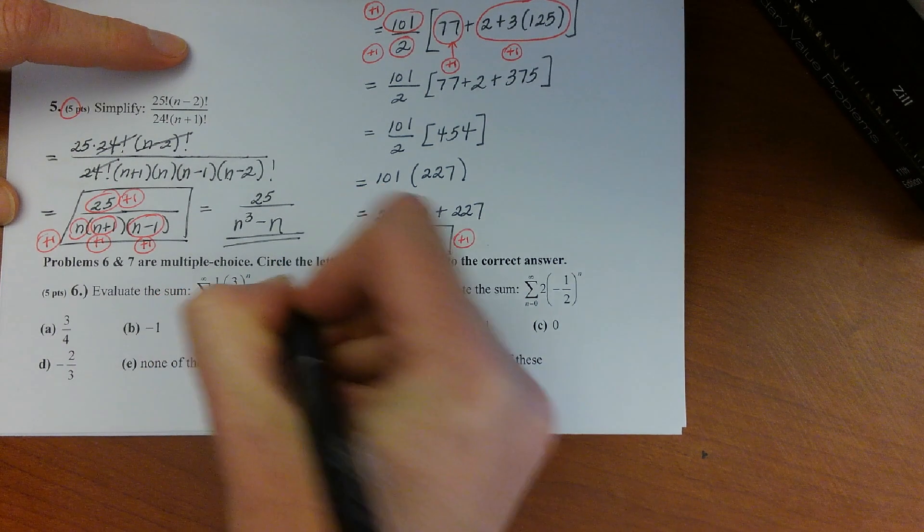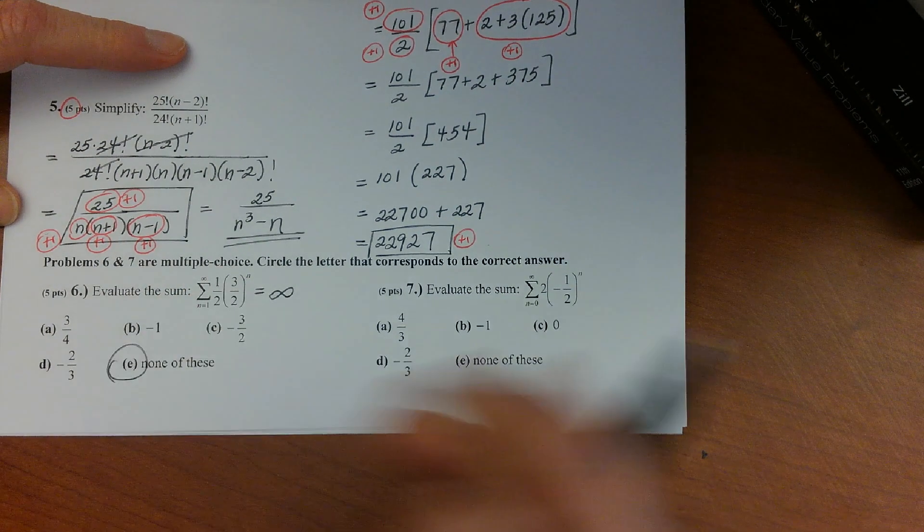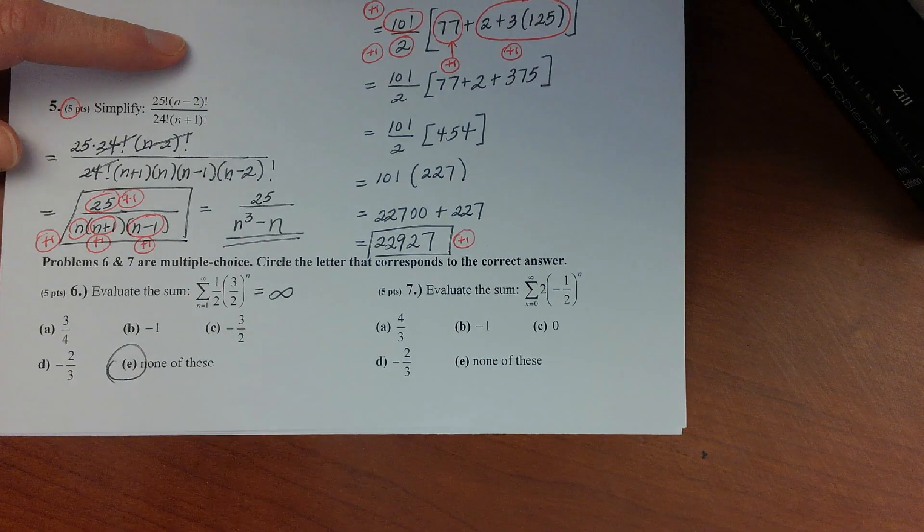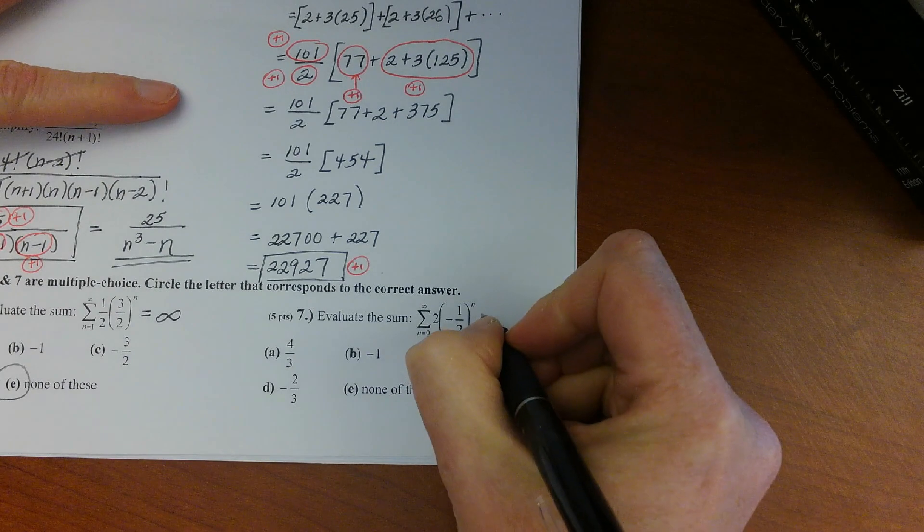So if you're adding up infinitely many of them, the answer to this would have been infinity. And so the answer infinity was not one of the options, so we would need to say none of these. Hopefully that makes sense.